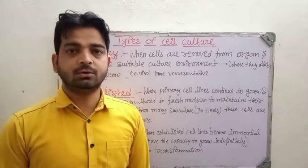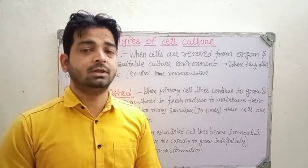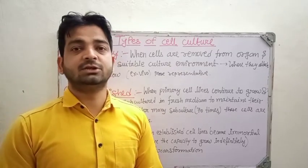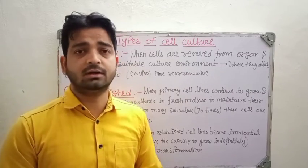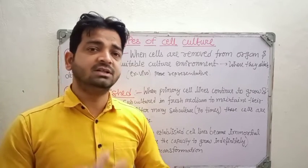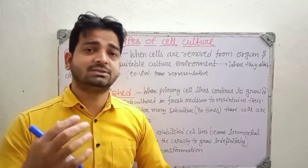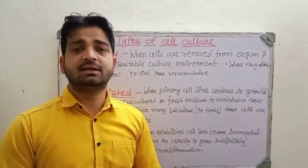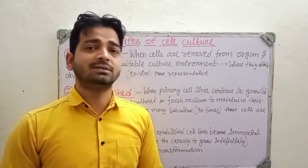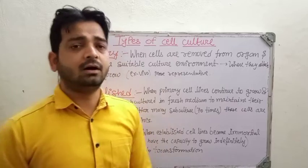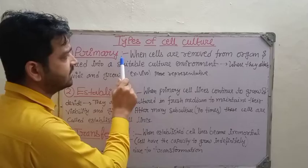Hello students, now we are going to discuss the different types of cell culture. In the last class we discussed animal cell culture in a suitable medium. When we isolate cells or organs from animals, there are three types of cell culture: the first is primary cell culture, the second is established cell culture, and the third is transformed cell culture.